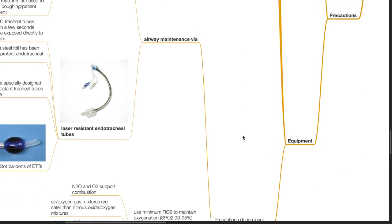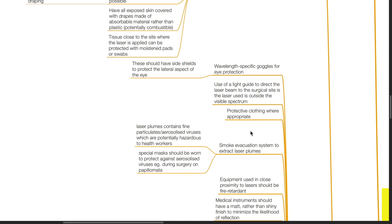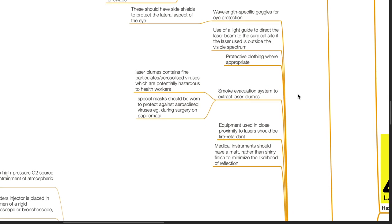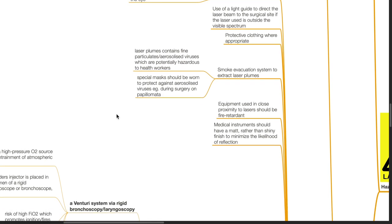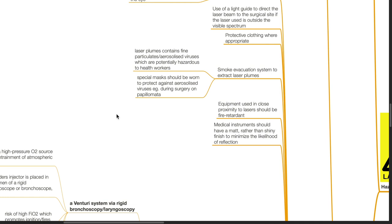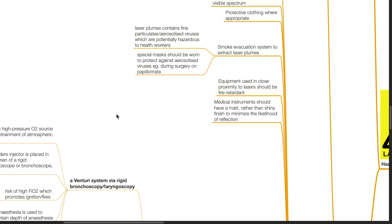Equipment. Wavelength specific goggles for eye protection should be used. These should have side shields to protect the lateral aspect of the eye. A light guide should be used to direct the laser beam to the surgical site if the laser use is outside the visible spectrum. Use protective clothing when appropriate. Smoke evacuation system should be used to extract laser plumes. Laser plumes contain fine particulates and aerosolized viruses which are potentially hazardous to healthcare workers. Special masks should be worn to protect against aerosolized viruses such as during surgery on papillomata. Equipment used in close proximity to lasers should be fire retardant. Medical instruments should have a matte rather than shiny finish to minimize the likelihood of reflection of lasers.